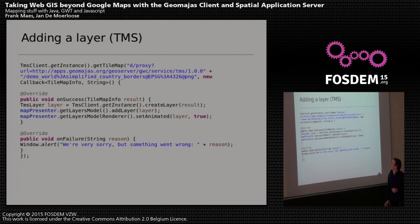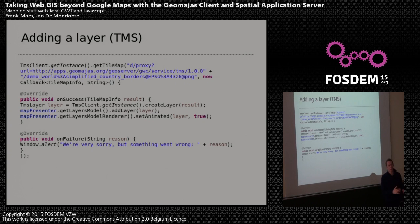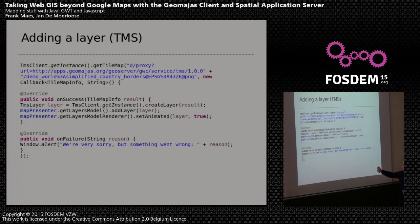For adding layers, each layer type has a particular client instance. In this case it's the TMS client — you get the singleton with a get-instance call and pass it a URL to a TMS server. Since the URL is on a different server, you need some proxying on the server side. It uses an asynchronous interface, so you receive a callback with the layer and then call getLayersModel on the map to add your layer. You can also set it to animate on zooming.